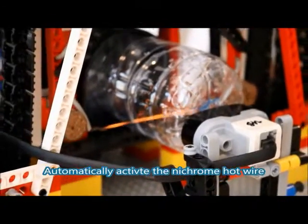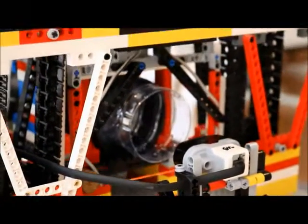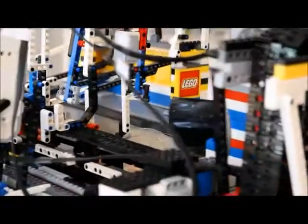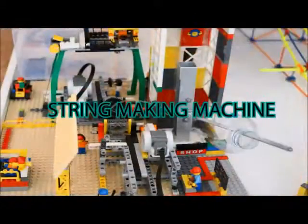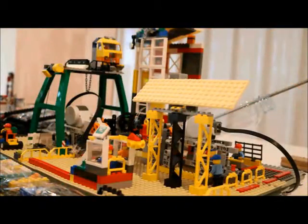Then the arm pulls the rest of the bottle out, which now has its top cut off, into this hole, which will then be transferred to the second machine, the string making machine.